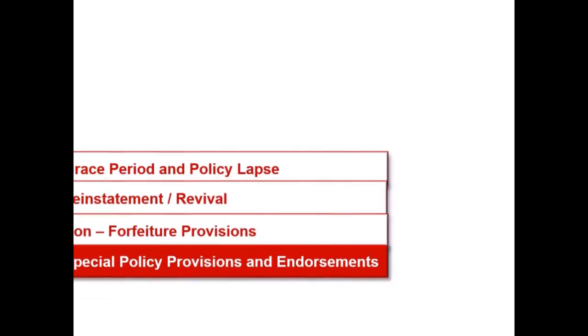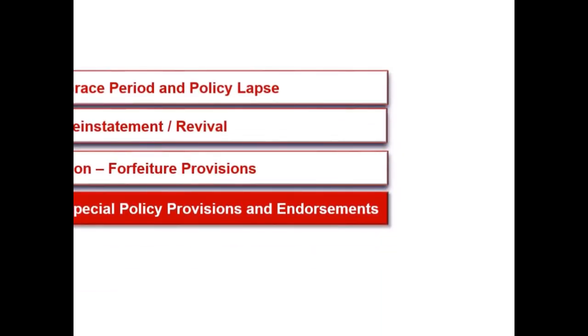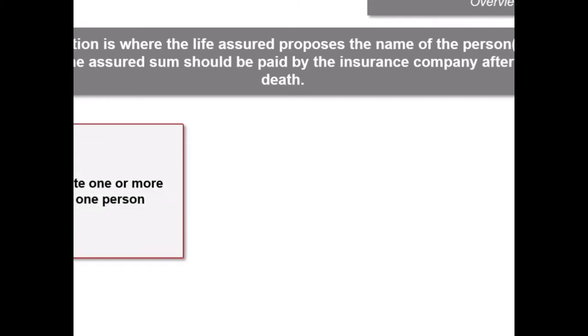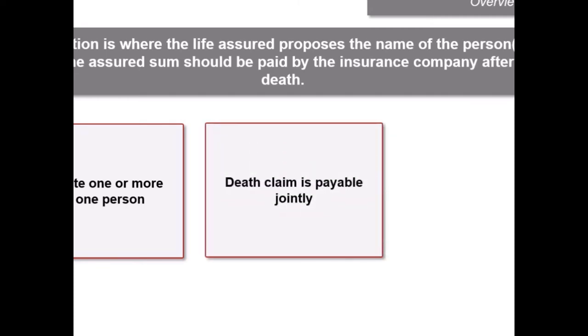In this next video of the lesson Documentation Policy Condition 2, we will learn about special policy provisions and endorsements. Nomination is where the life-assured proposes the name of the person to whom the assured sum should be paid by the insurance company after death. The life-assured can nominate one or more than one person as nominees. Where more than one nominee is appointed, the death claim will be payable to them jointly or to the survivor or survivors. No specific share for each nominee can be made.